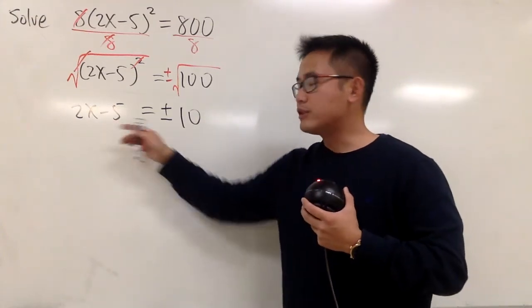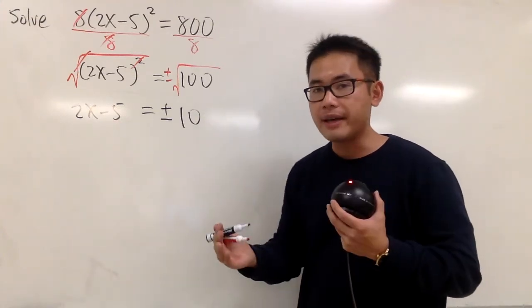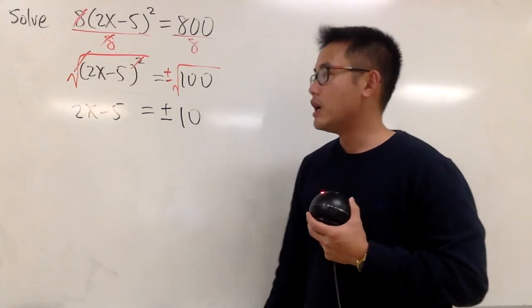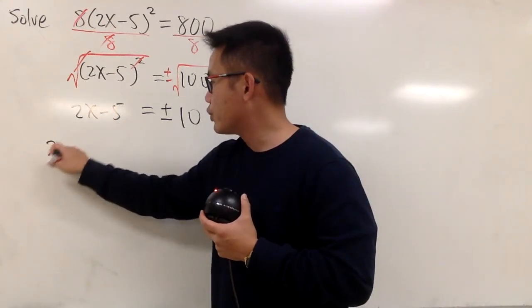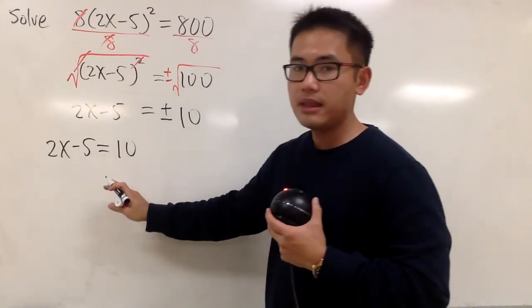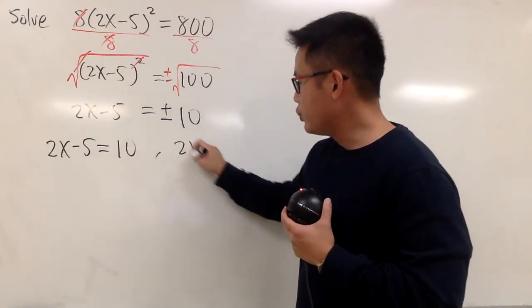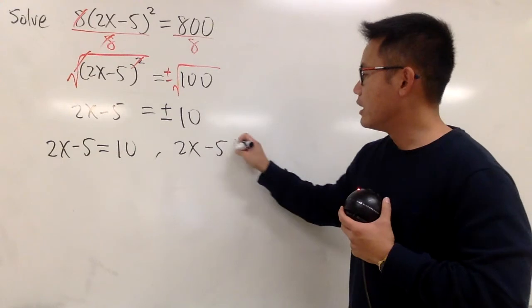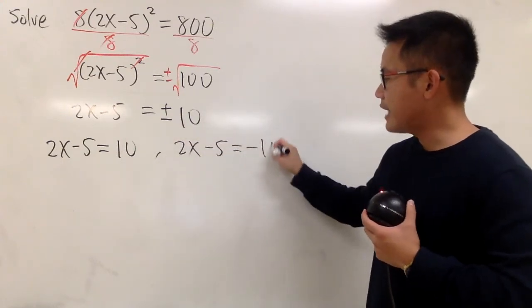And because we know these are just regular numbers, we can combine them. This is how we are going to do it. I'm going to first write this down: 2x minus 5 is equal to positive 10. And the other one is 2x minus 5 is equal to negative 10.